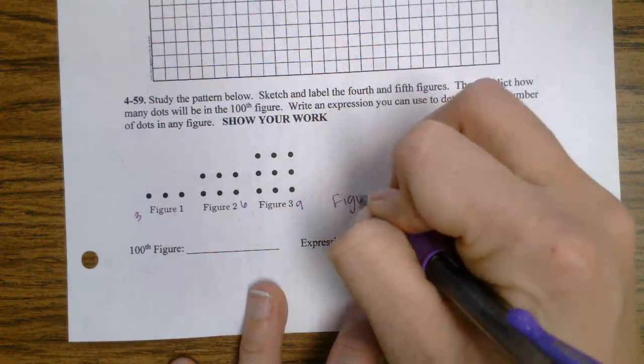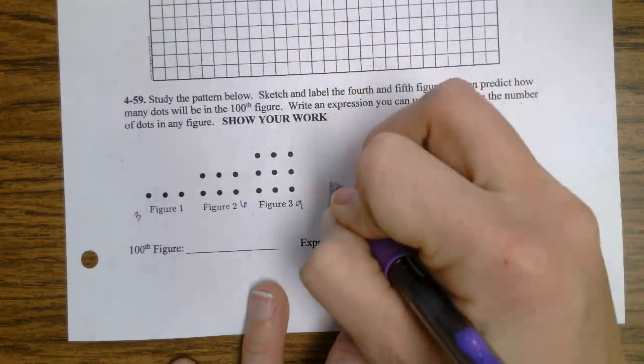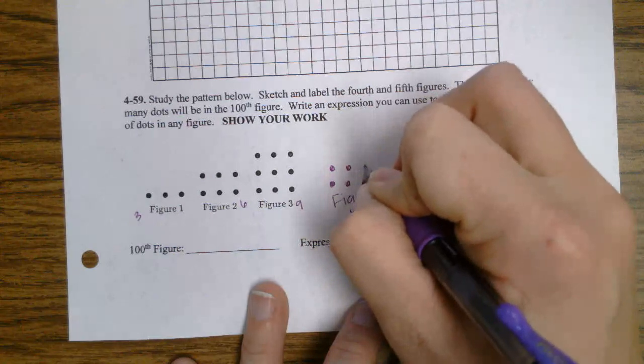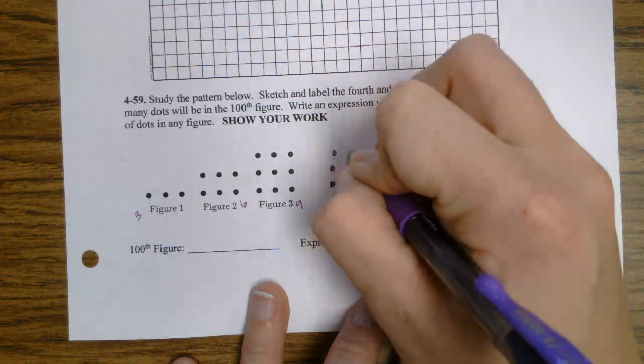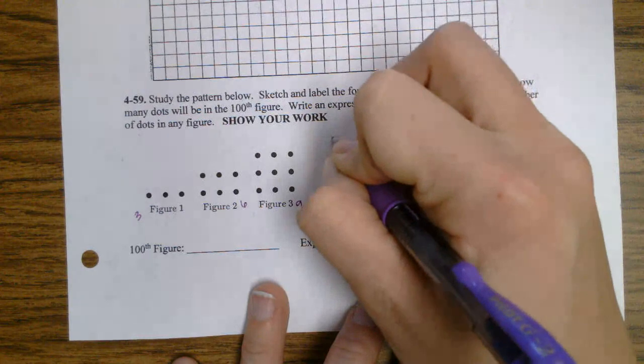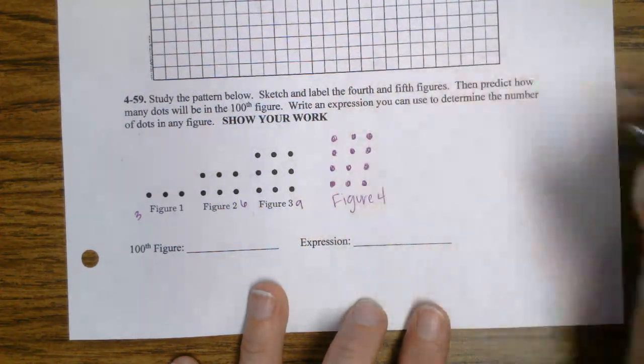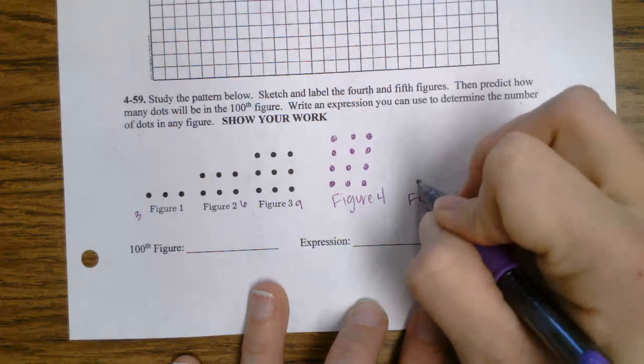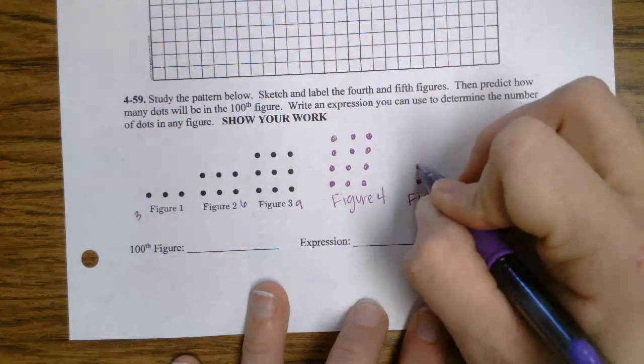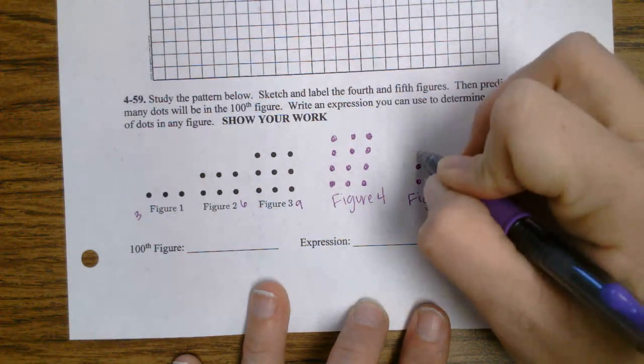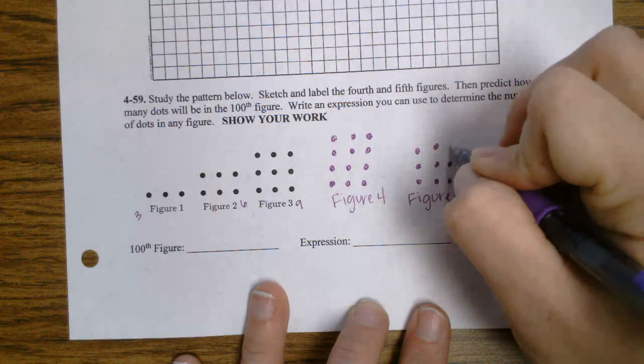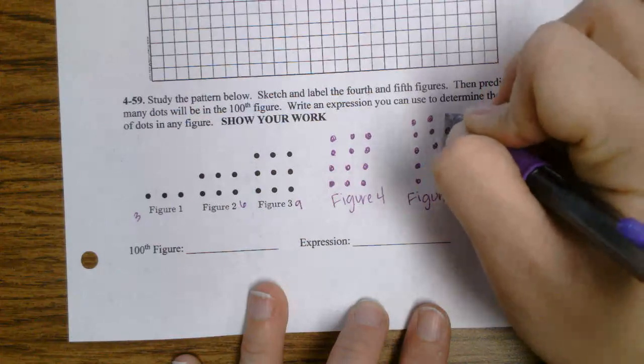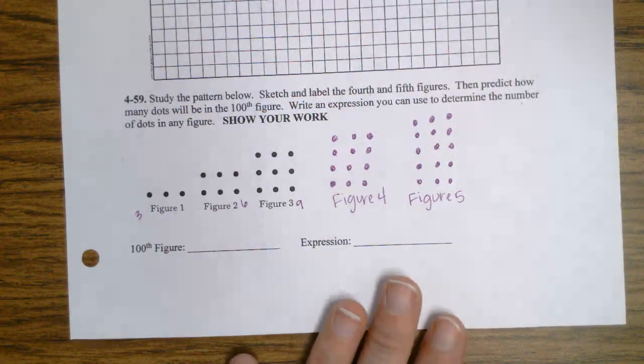So figure 4, I would have 1, 2, 3, 4, 5, 6. 1, 2, 3, 4, 5, 6, 7, 8, 9, 10, 11, 12. Figure 5, 1, 2, 3, 4, 5, 6. 1, 2, 3, 4, 5, 6, 7, 8, 9, 10, 11, 12, 13, 14, 15. I was going by 3 every time. I'm adding 3 and it's this top row. Because this figure 1 is all the bottom. Figure 2, figure 3, figure 4, figure 5, and figure 6 I would add 3 more.